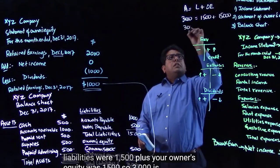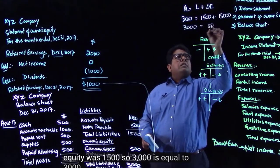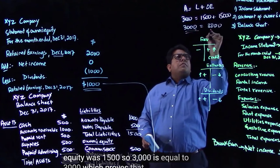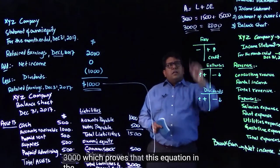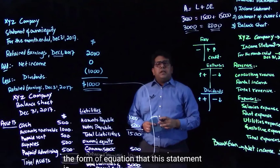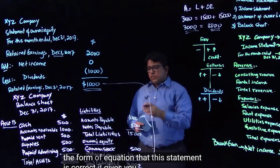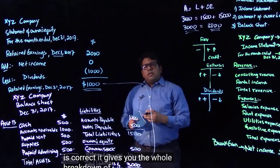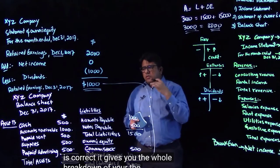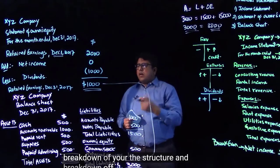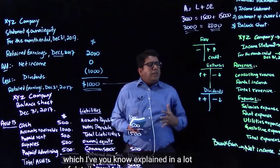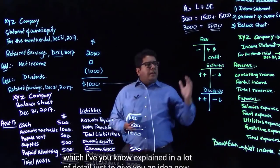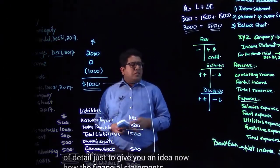So 3000 equals 3000, which proves that this statement is correct. It gives you the whole breakdown of your balance sheet, which I've explained in a lot of detail, just to give you an idea of how the financial statements process drivers.